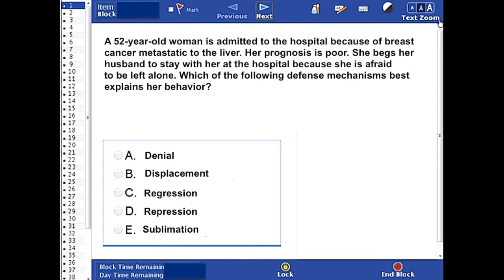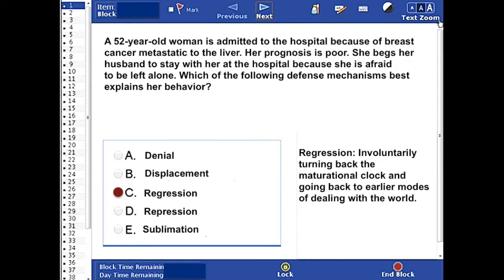Okay, so the answer here is C, regression. Regression is involuntarily turning back to the maturational clock and going back to earlier modes of dealing with the world.